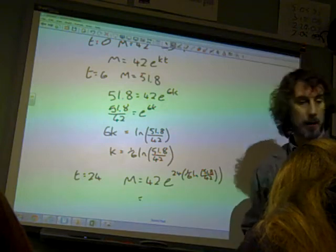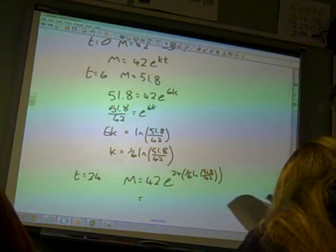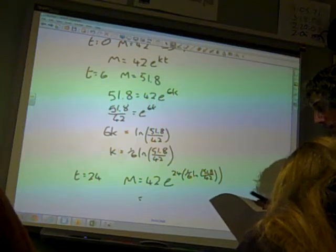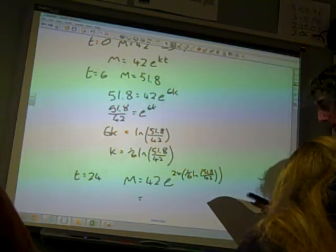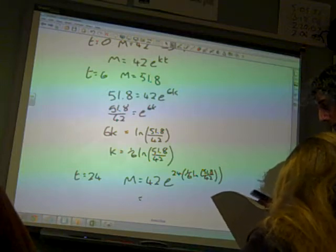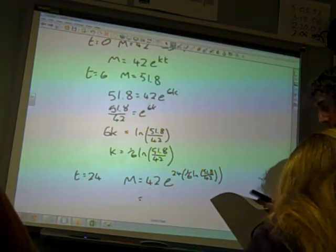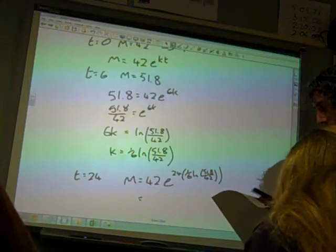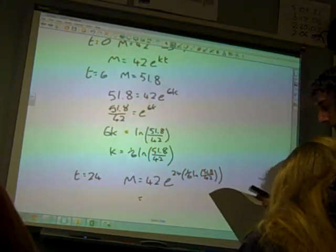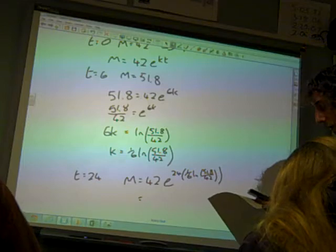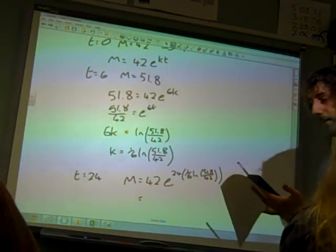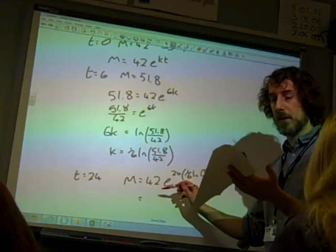You get 42e to the 24 times 1 over 6 ln 51.8 over 42. I've put in the complete exact name, lots of brackets, everywhere. 97.1787.